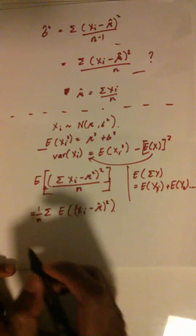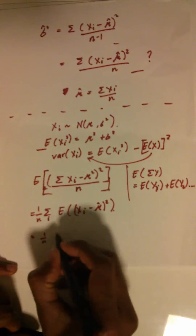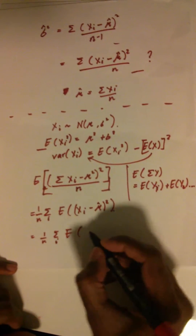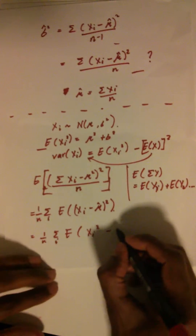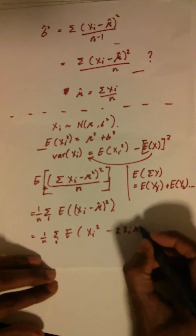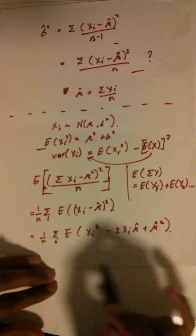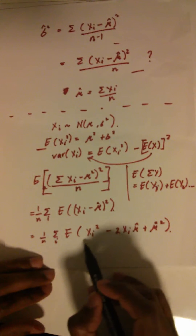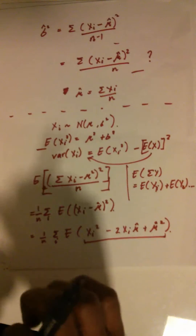Now let's expand what's inside. I have (1/n) times the sum of the expectation of: xi² − 2xi·μ̂ + μ̂². For the time being I'm going to focus entirely on the expectation of the middle term, −2xi·μ̂.